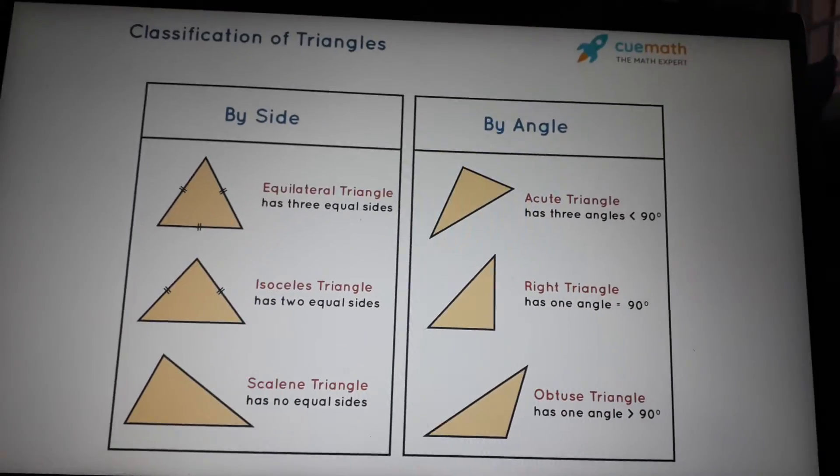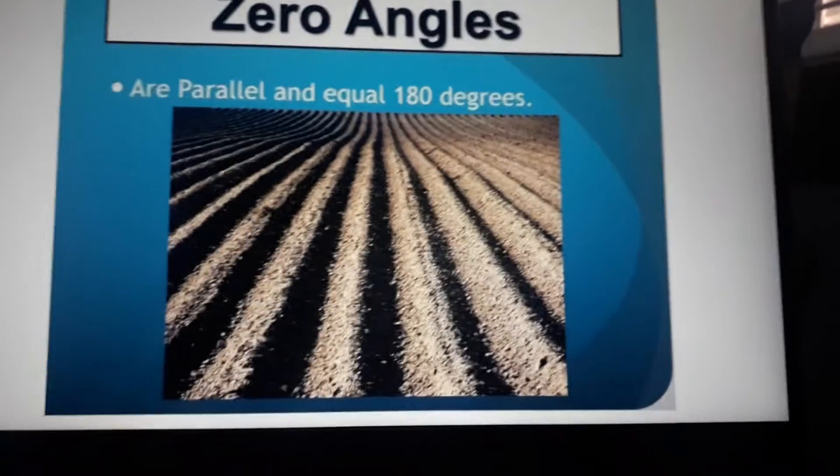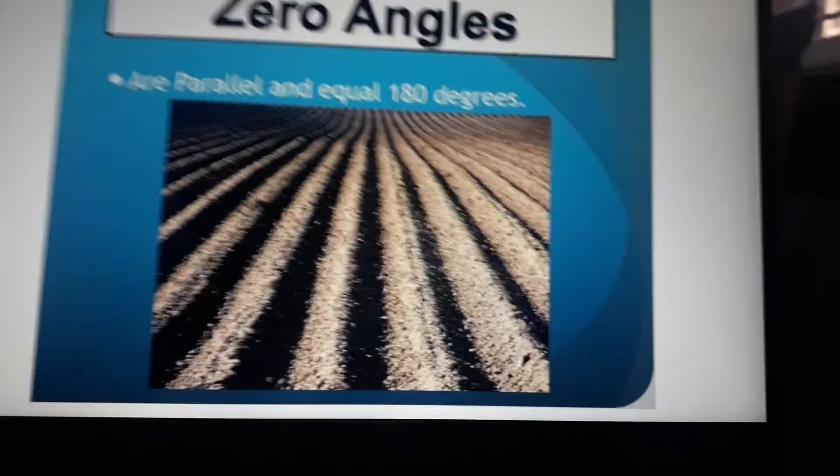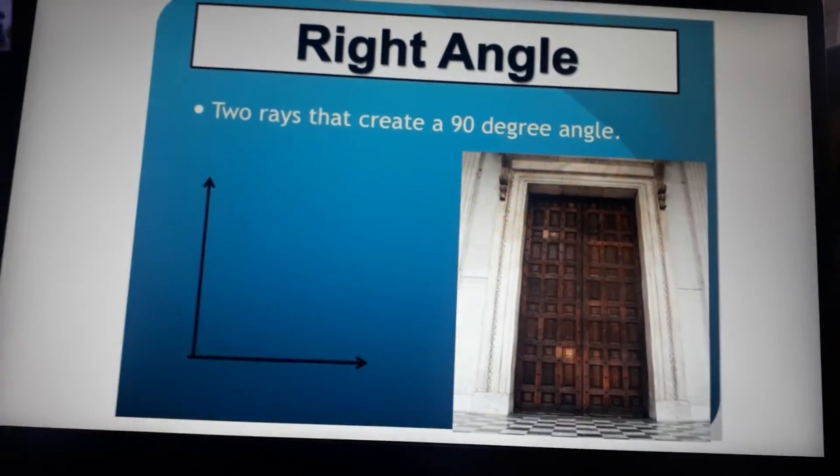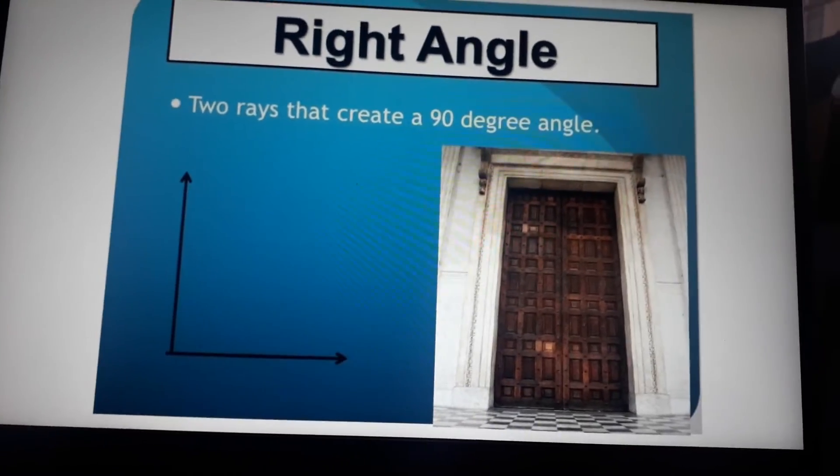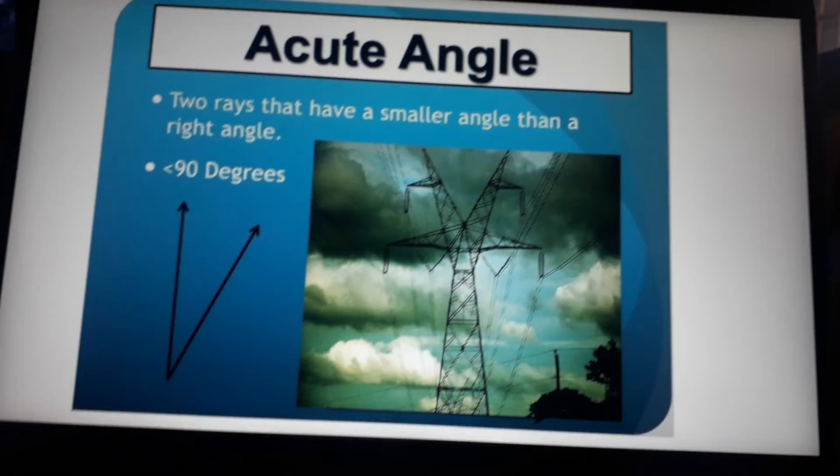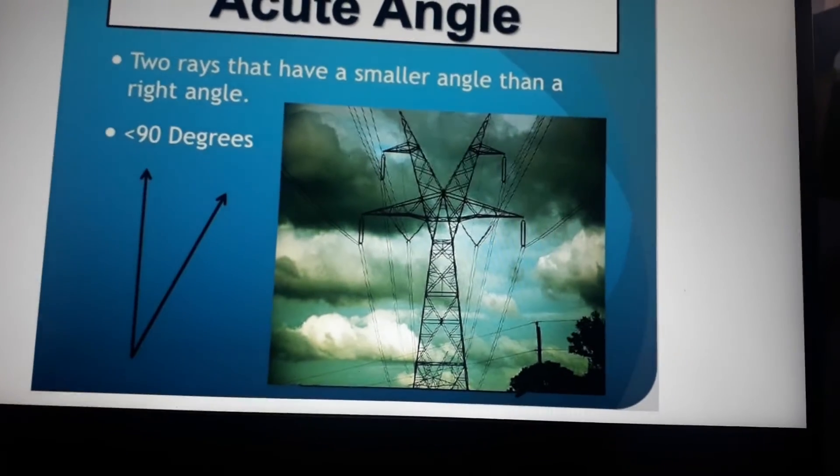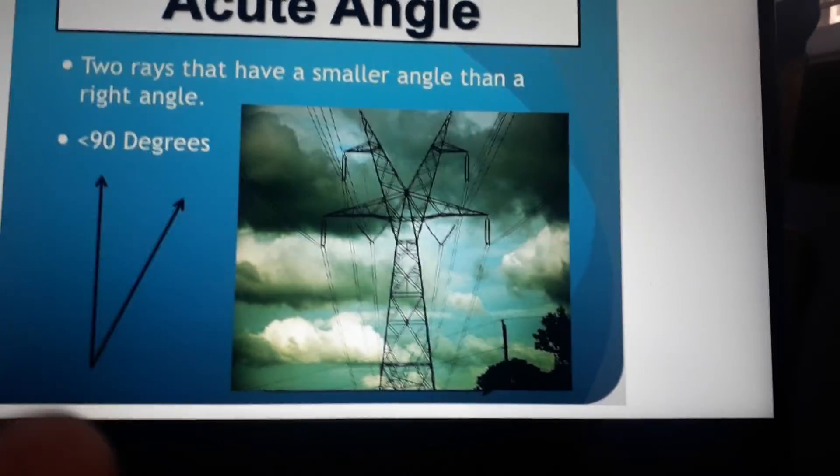Zero angle or parallel lines equal 180 degrees. Right angle: two rays that create a 90 degree angle. Acute: two rays that have a smaller angle than a right angle. Obtuse angle: angles larger than a right angle and smaller than two right angles.